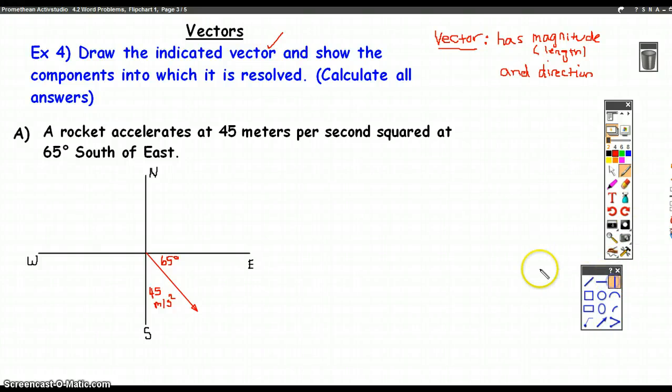Mathematically, that means nothing more than to make yourself a triangle. Make yourself a triangle by connecting the tip of this vector to the, what we're going to call the x-axis. It's the west, you know, the east-west axis.